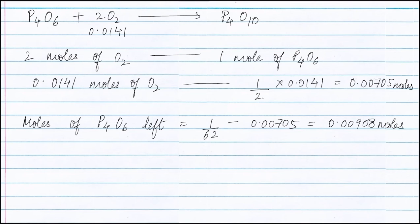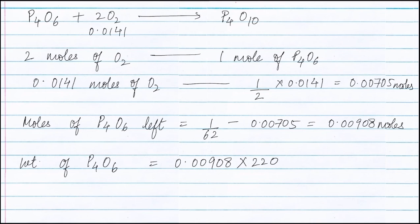Therefore, moles of P4O6 left is equal to 1/62 minus 0.00705 moles, which is equal to 0.00908 moles. Therefore, weight of P4O6 is equal to moles of P4O6, that is 0.00908 moles, multiplied by molecular weight of P4O6, that is 220 grams.